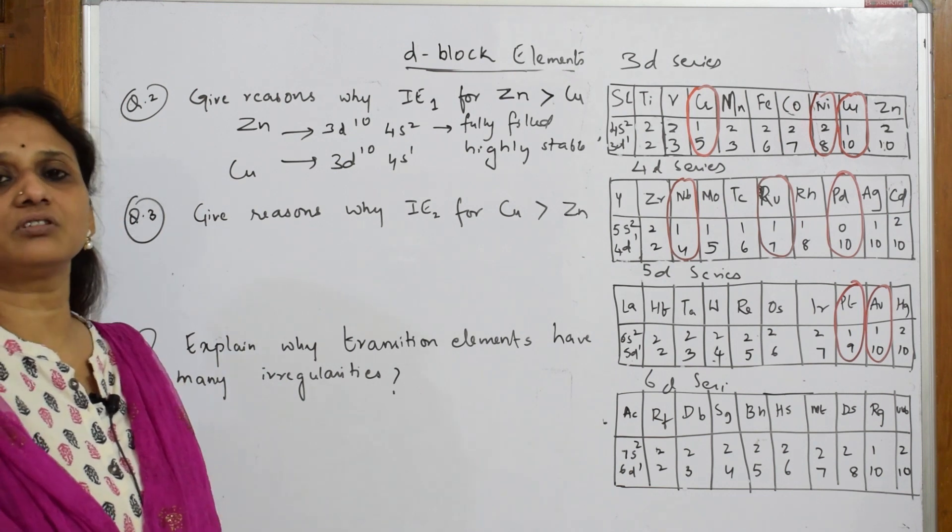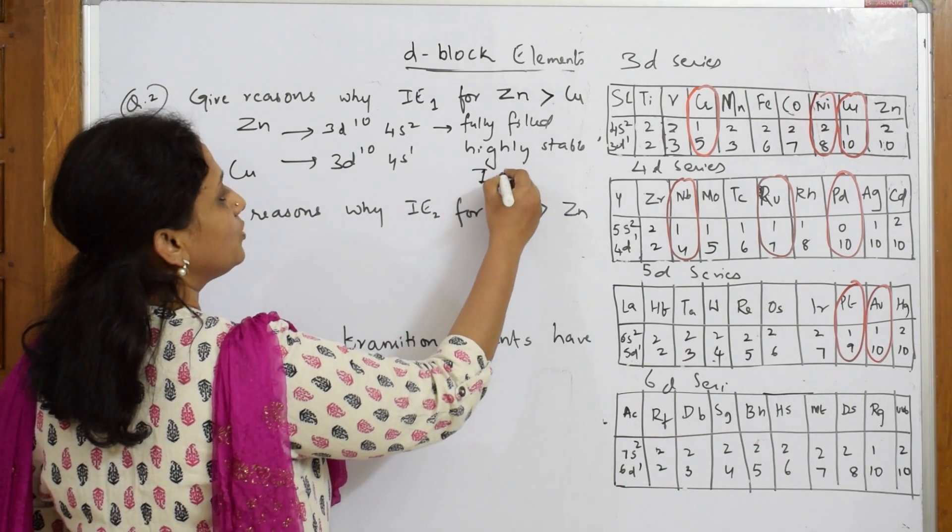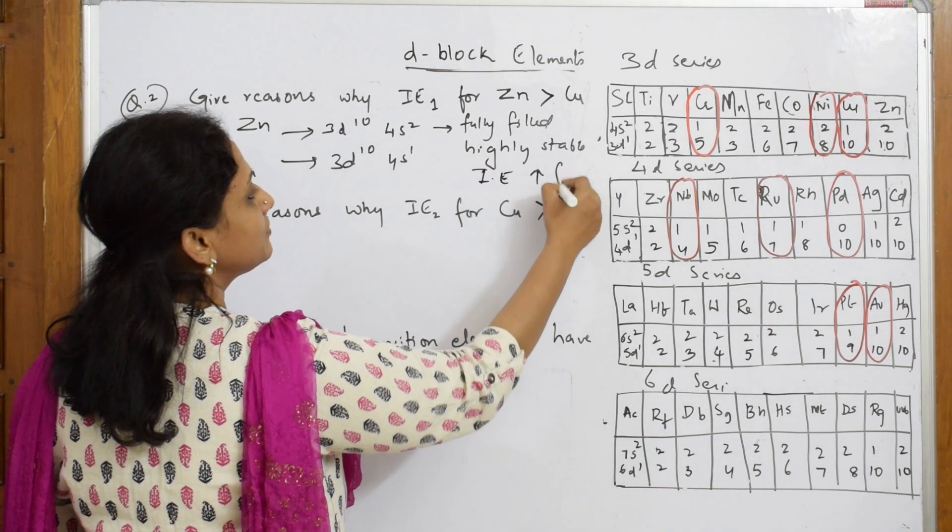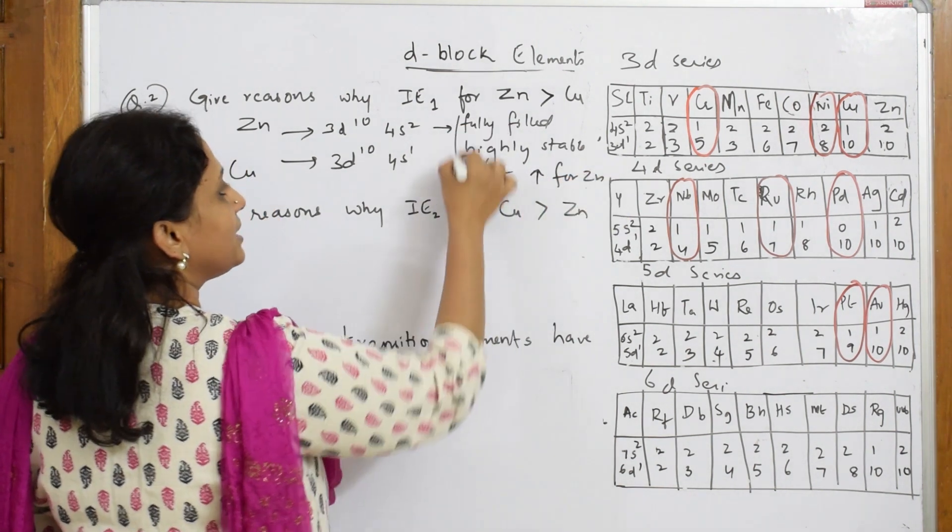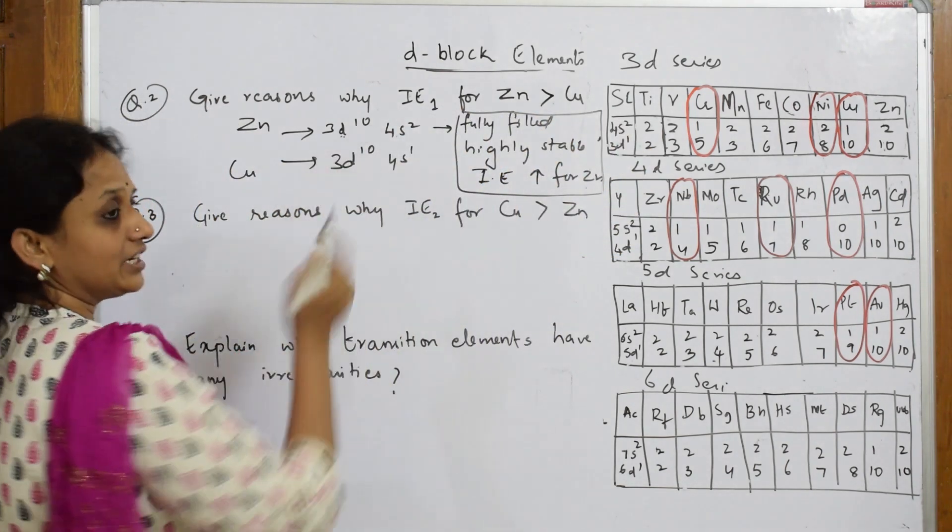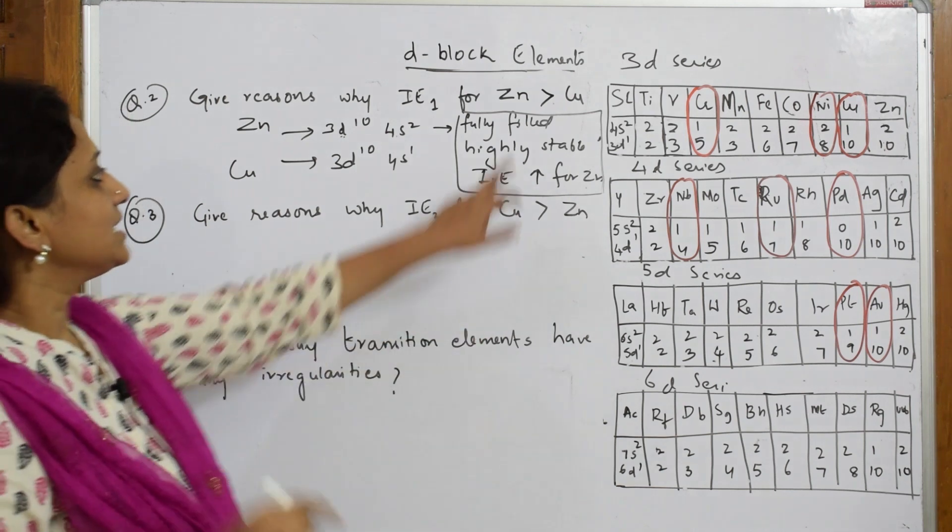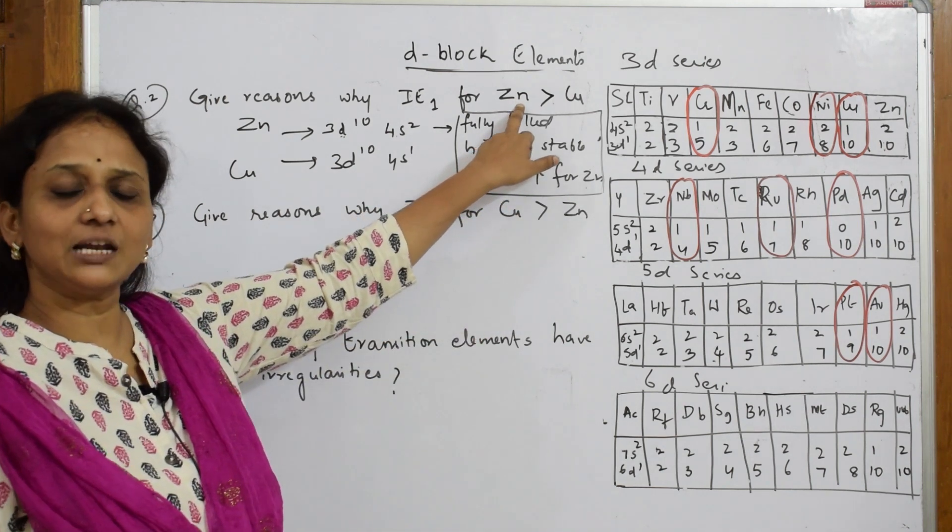When it is highly stable, what happens? Ionization enthalpy - obviously I require a lot of energy to remove the electron from that stable configuration. So automatically IE1 is higher for zinc. This is the main reason which you have to write. Once it is fully filled, very difficult for me - I have to apply a lot of energy to pull that electron. Hence Zn has higher ionization enthalpy than copper.